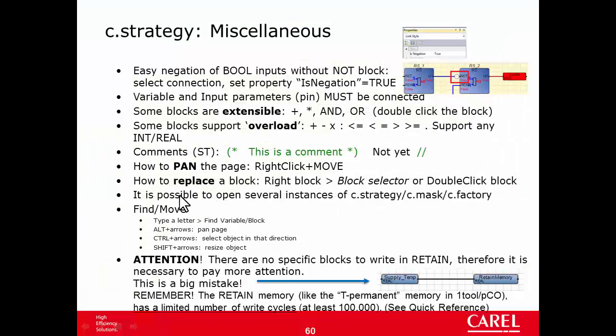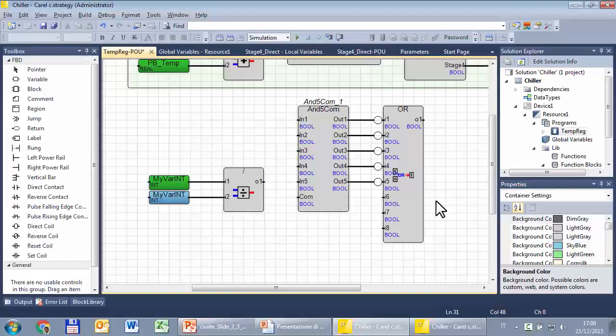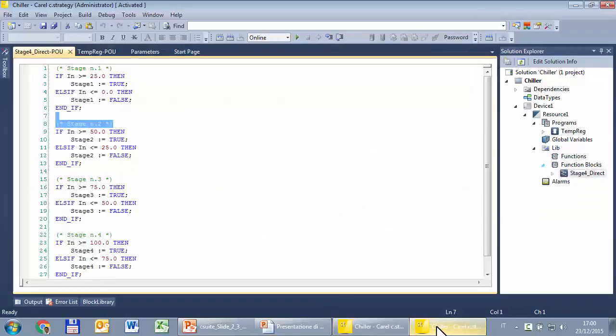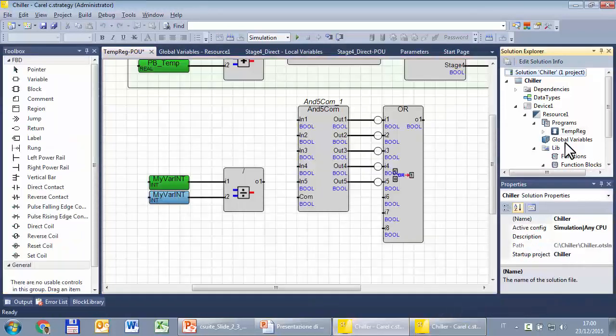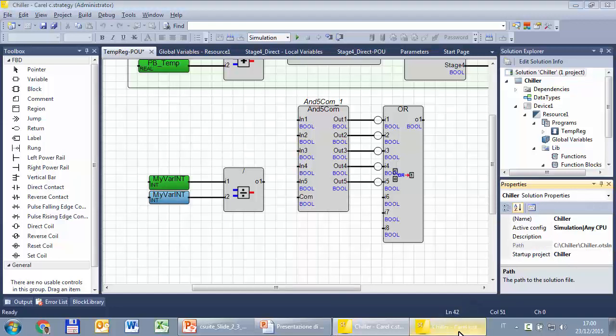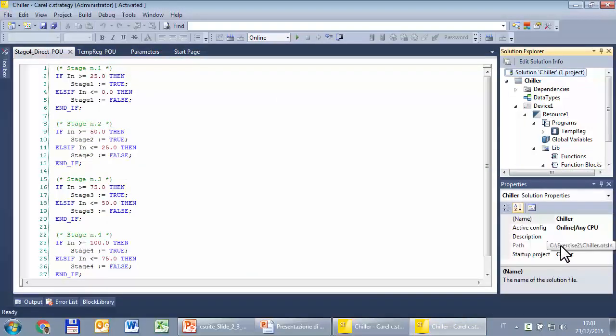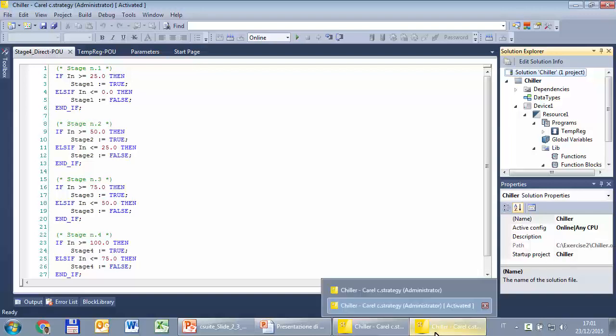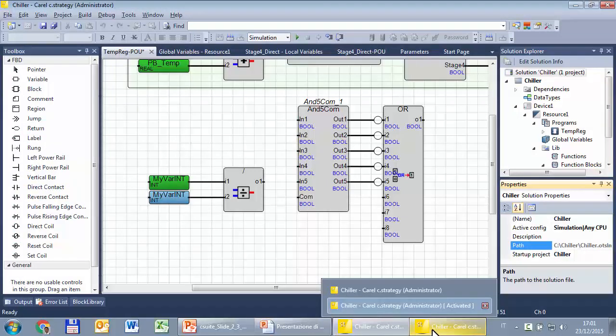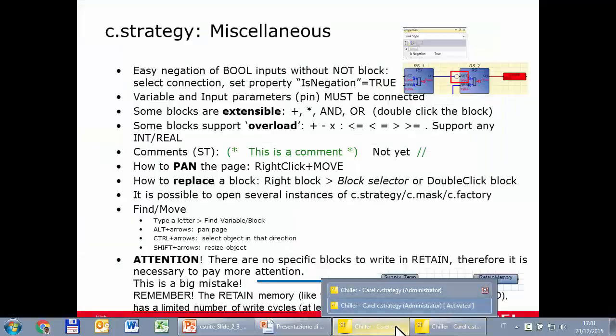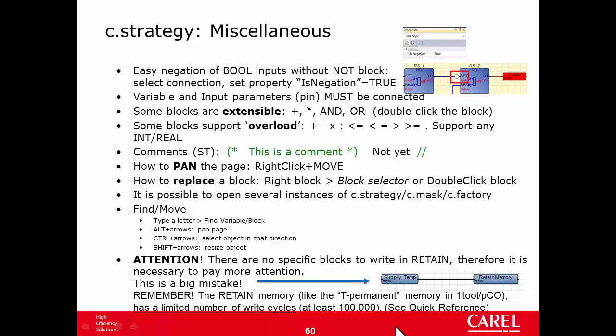It is possible to open several instances of C-Strategy and other editors. You probably noticed here I have already two C-Strategy. One with this solution, and the other with the exercise 2. This is very convenient, for example, if you want to check how you developed a given strategy in a project while you are working into another project. At the moment it is not possible to copy objects, some blocks from a C-Strategy to another. But in the future it will be possible.